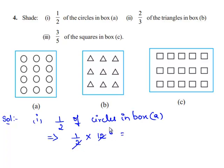Therefore, half of the circles in box A means 6 circles. Therefore we need to shade 6 circles out of box A.